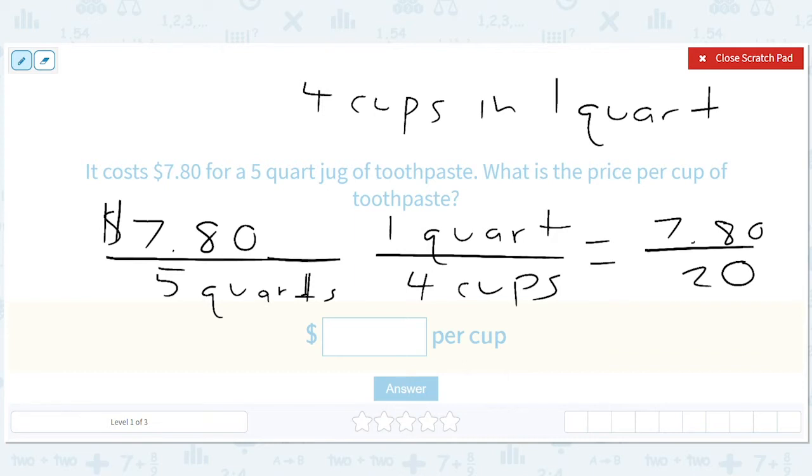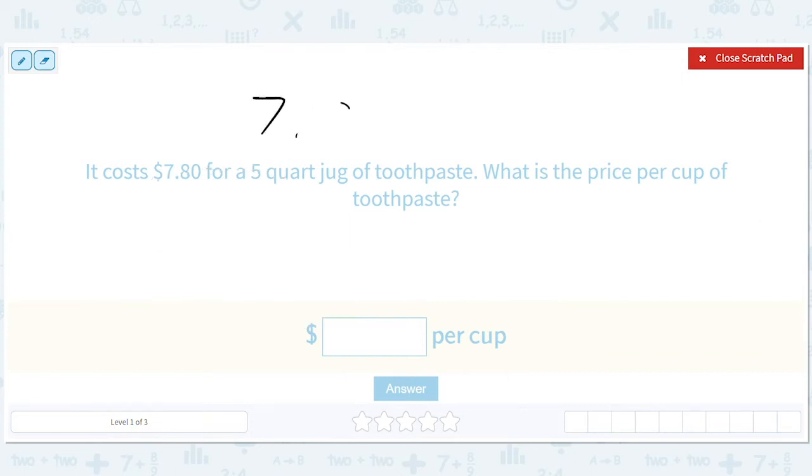Another way you can think about it is you do 7.8 divided by five. And that's the price per quart. But then you have to divide that by four because every quart has four cups. So you're basically taking 7.8 divided by five and then dividing it by four. So that's 7.8 divided by 20. This will go in three times. Three times 20 is 60. So we'll get 1.80. And then that will go in nine times. So the price per cup is 39 cents.